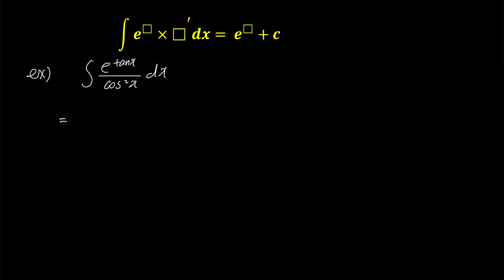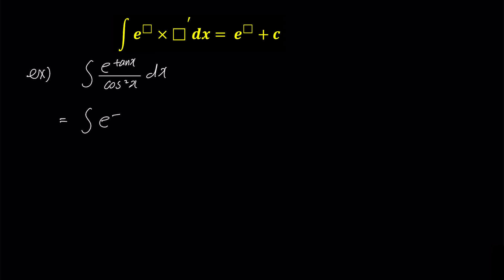Now let's take a look at our first example, the integral of e to the power of tan x over cosine squared x. Since the denominator cosine squared x is the reciprocal of the cosine function, we can express it as secant squared x. Let's apply our box rule, we put tan x in the first green box, and since the derivative of tan x is secant squared x, we put secant squared x directly in the box prime.